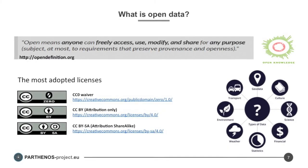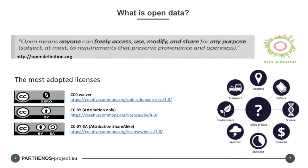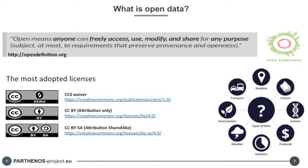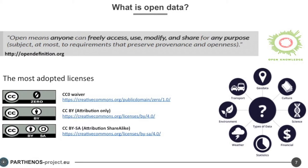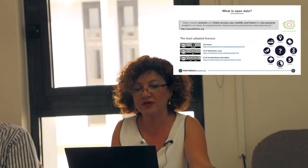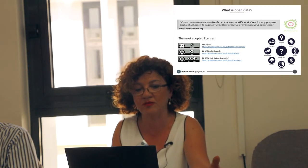Now we approach the concept of open data and open access. The open definition sets out principles that define openness in relation to data and content. Open means anyone can freely access, use, modify and share for any purpose. The first principle identified by the Open Knowledge Foundation is about availability and access: data must be available as a whole at no more than a reasonable reproduction cost, preferably downloadable over the web, and in a convenient and modifiable form. The second principle is about reuse and redistribution: data must be provided under terms that permit reuse and redistribution, including intermixing with other datasets, and the data must also be machine readable.